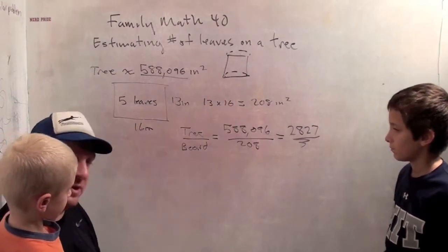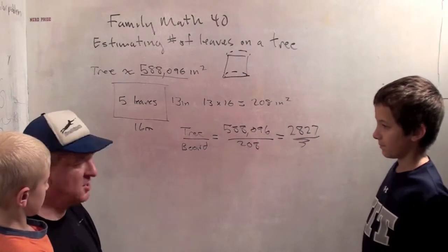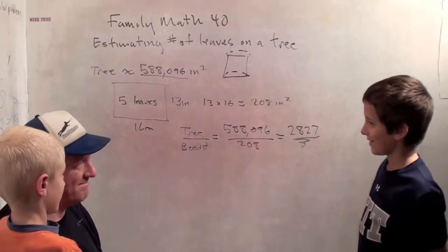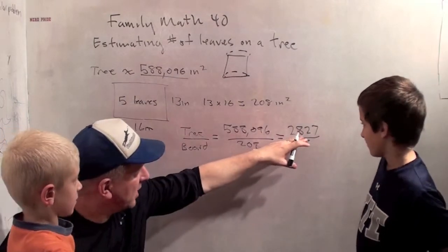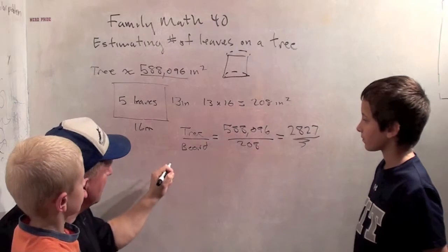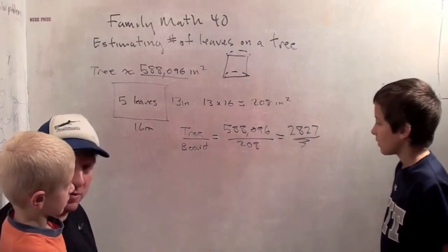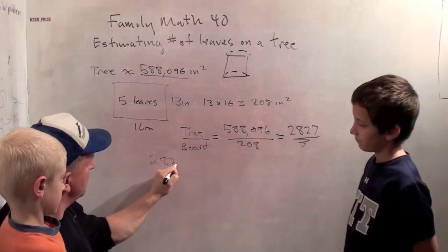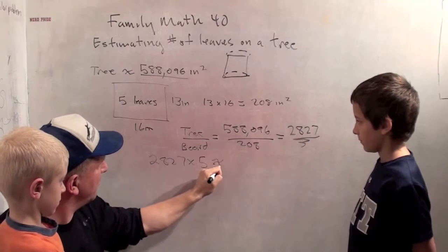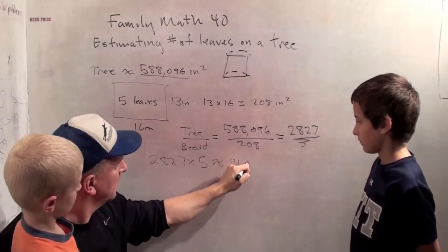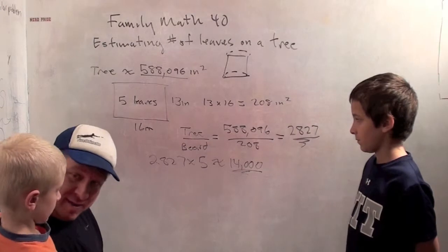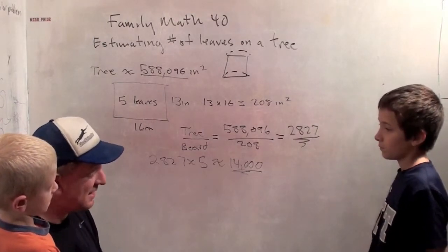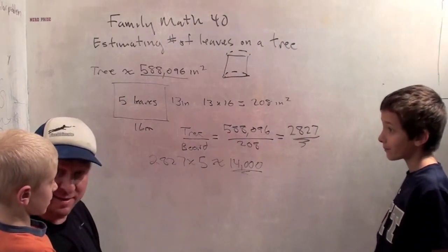Do we have 2827 of those boards lying around? No. Are you sure? Did you check upstairs? No, we don't have. How many of those boards do we have? One. That's not enough. But in any case, if we had 2827 boards, how many leaves would we need to cover up all those boards? We need to multiply 2827 by 5. So 2827 times 5 is about 14,000. So that tree we estimate has about 14,000 leaves. Whoa. Can you believe that?